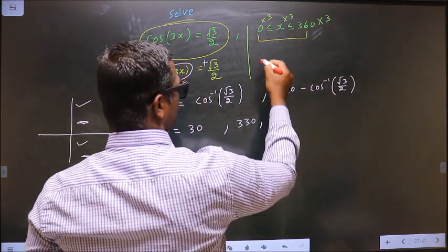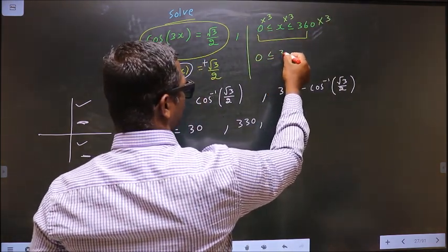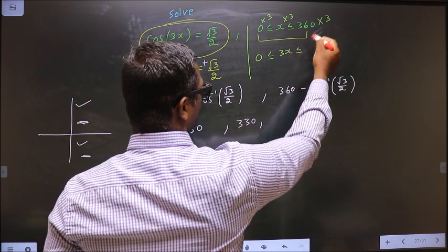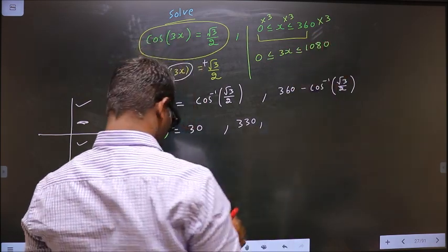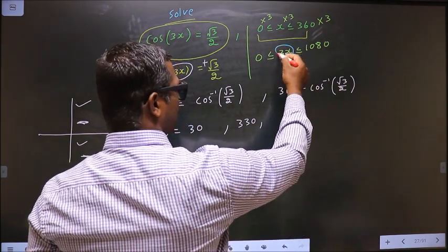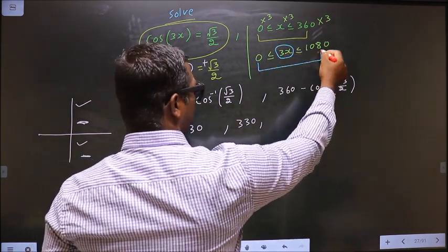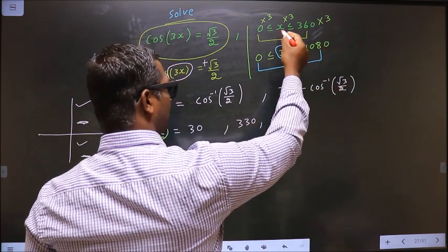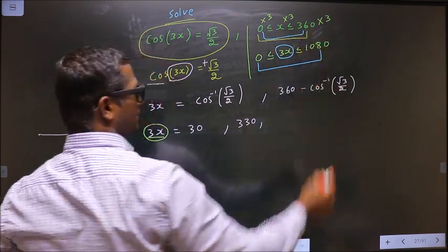So we get 0 less than or equal to 3x less than or equal to 1080. Now, when the values for 3x lie in this interval, automatically the values for x will lie in this interval.